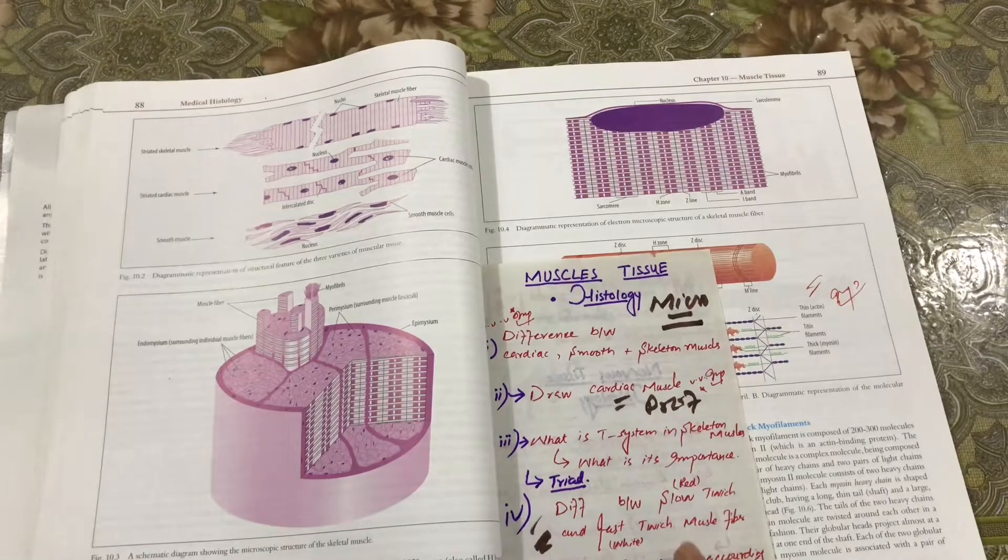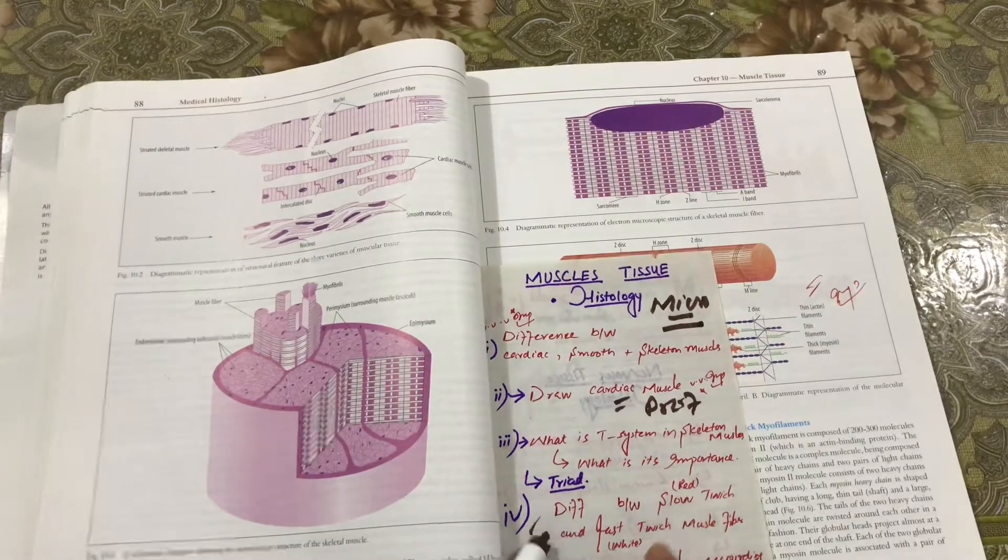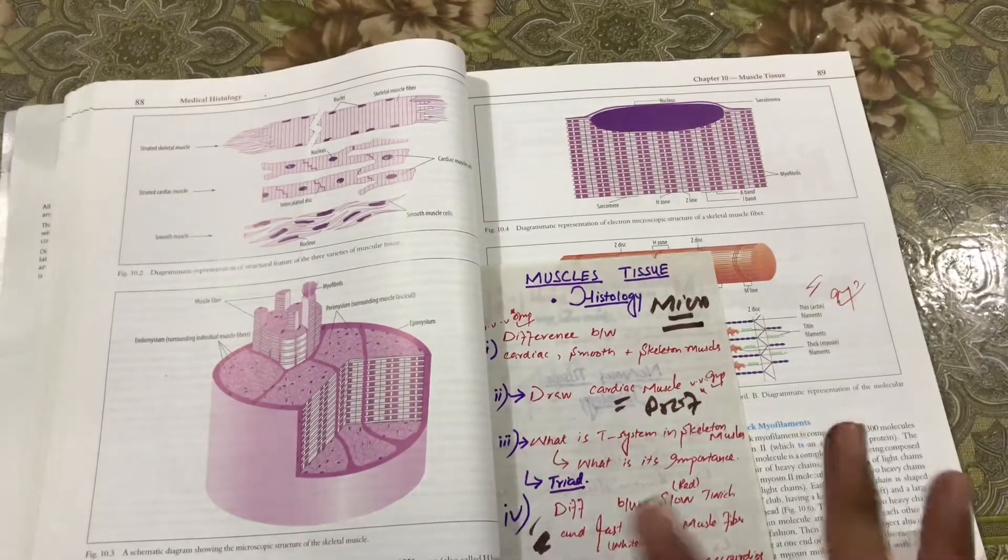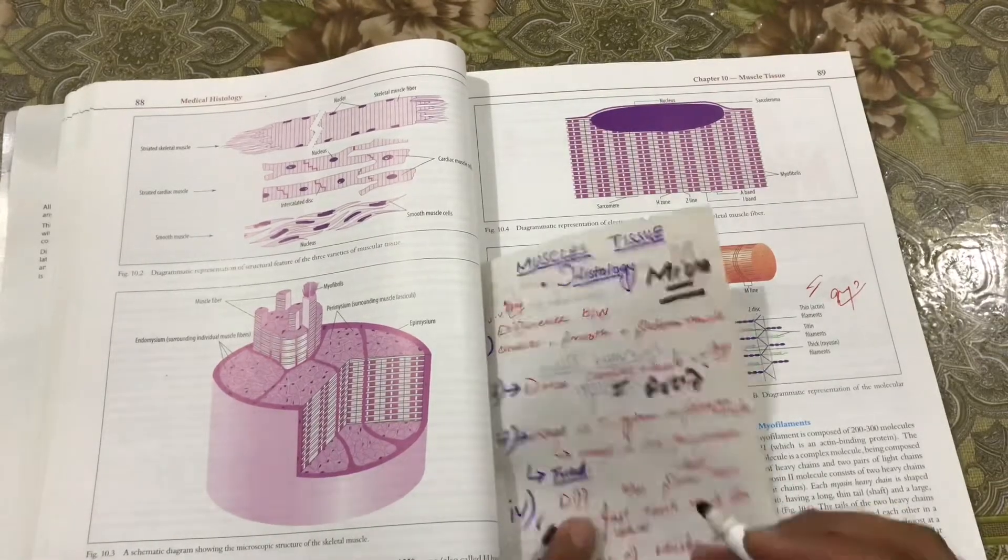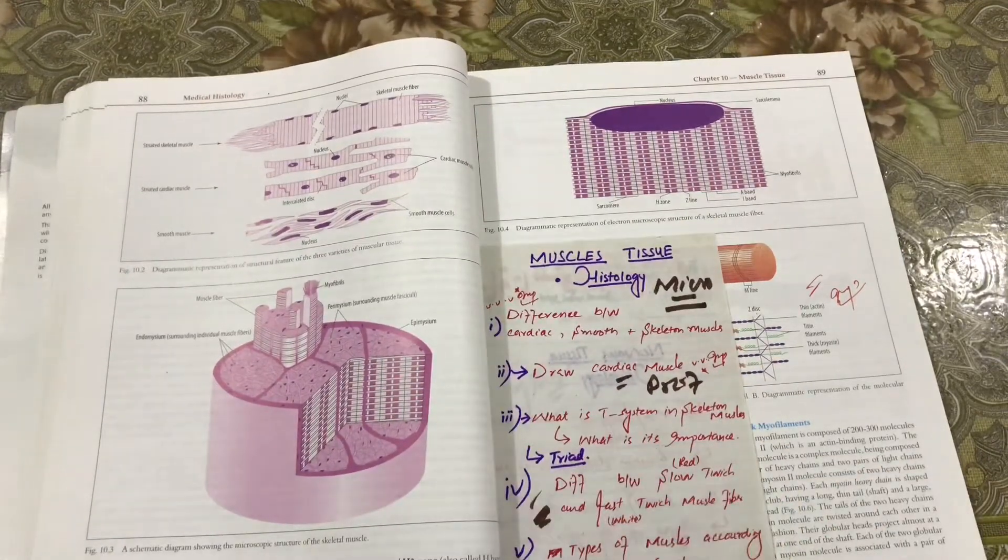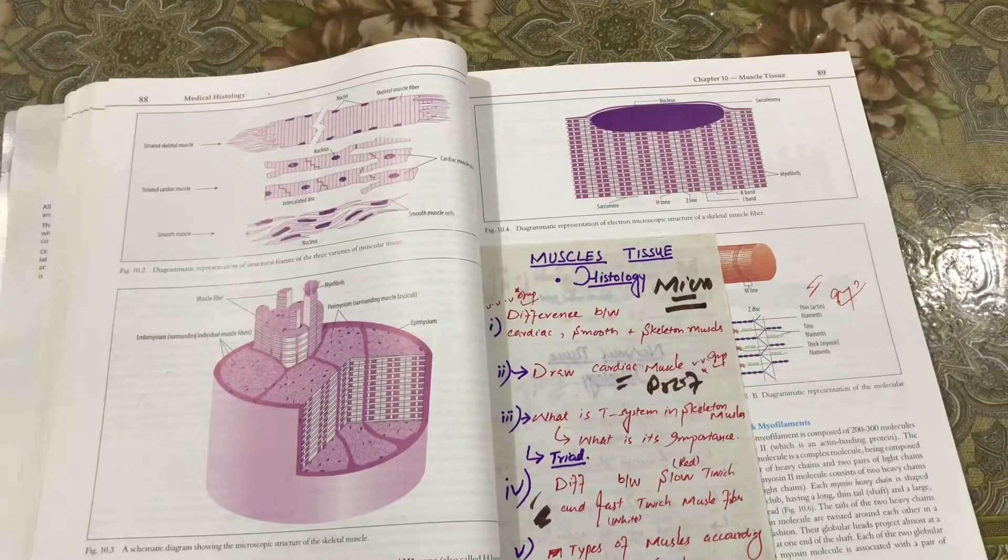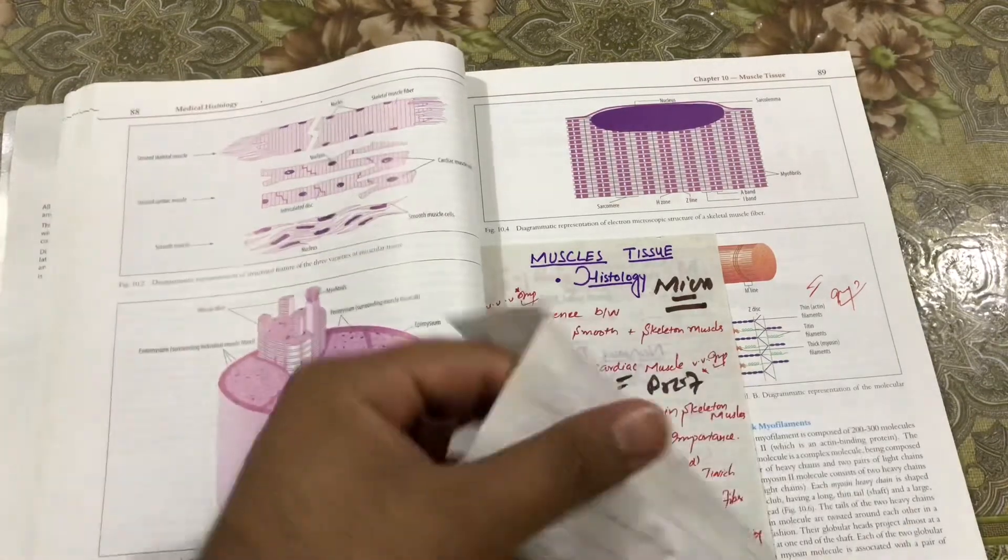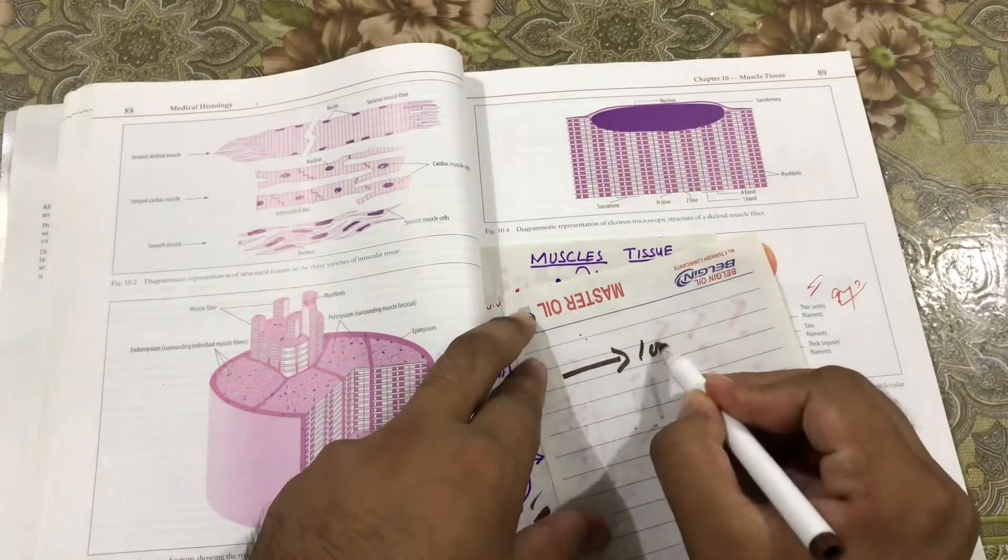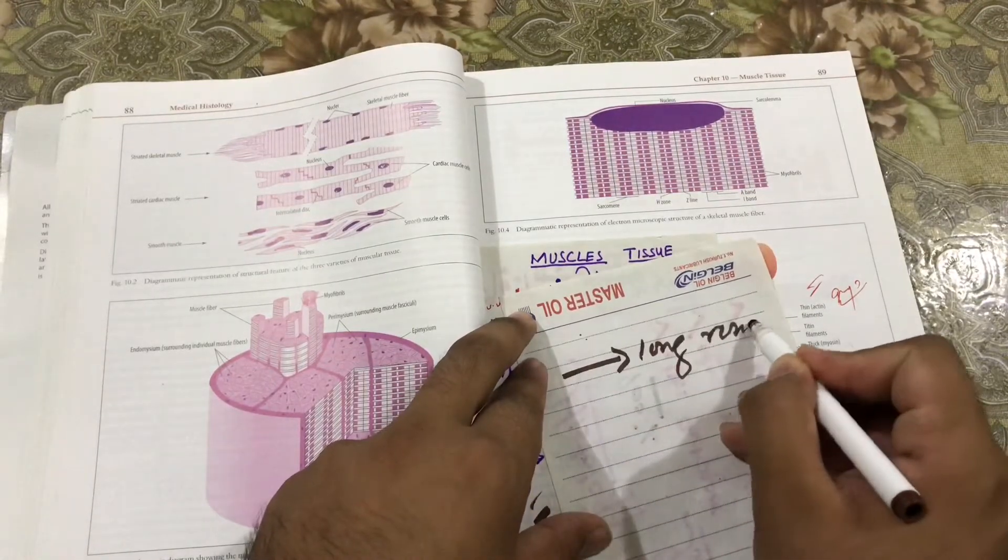Fast and slow twitch we call red and white twitch. Long running, one scenario came that a patient or subject doing long running. And some different things.